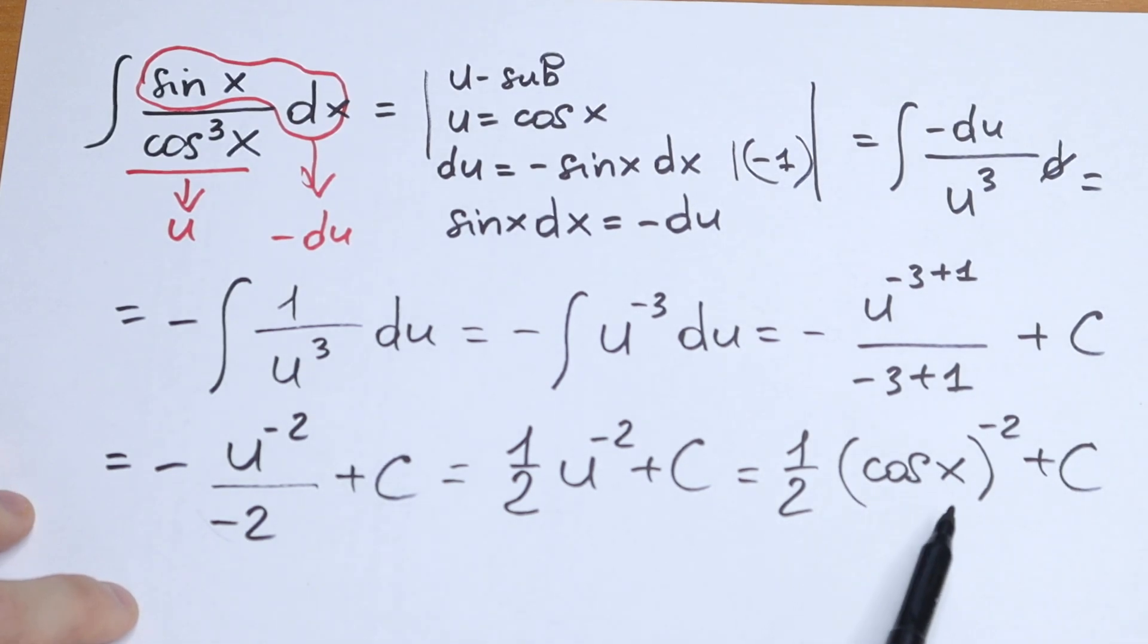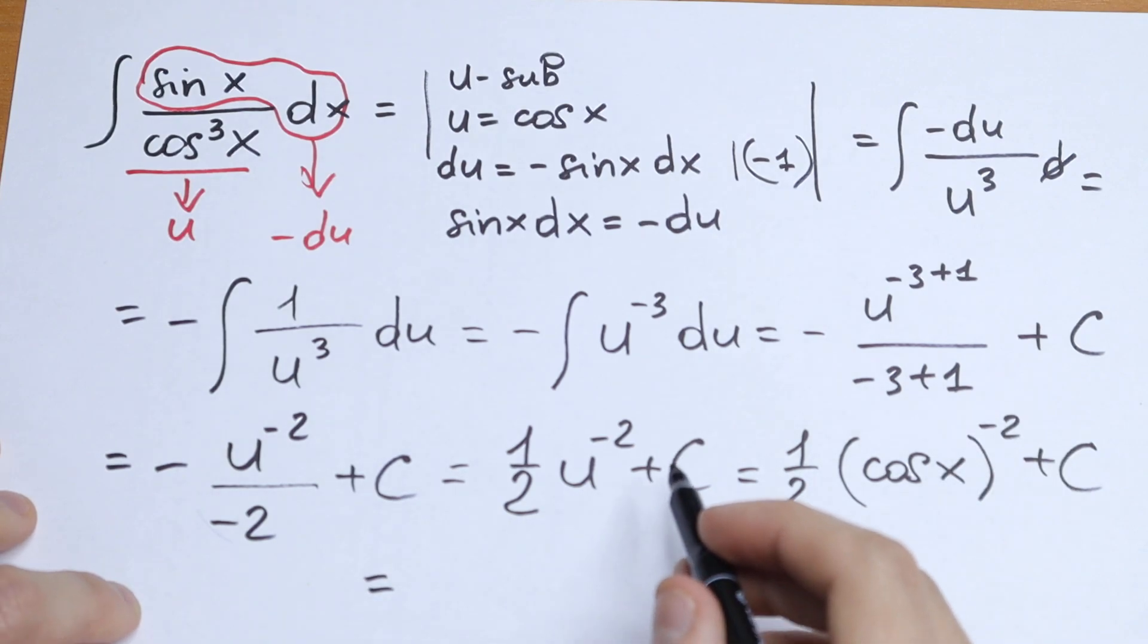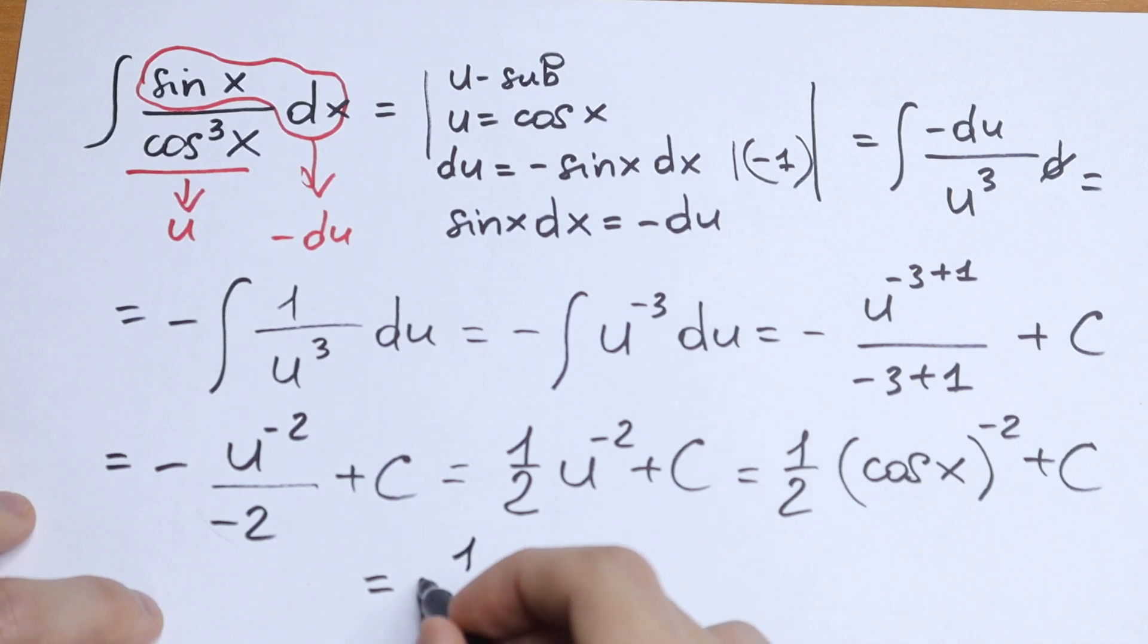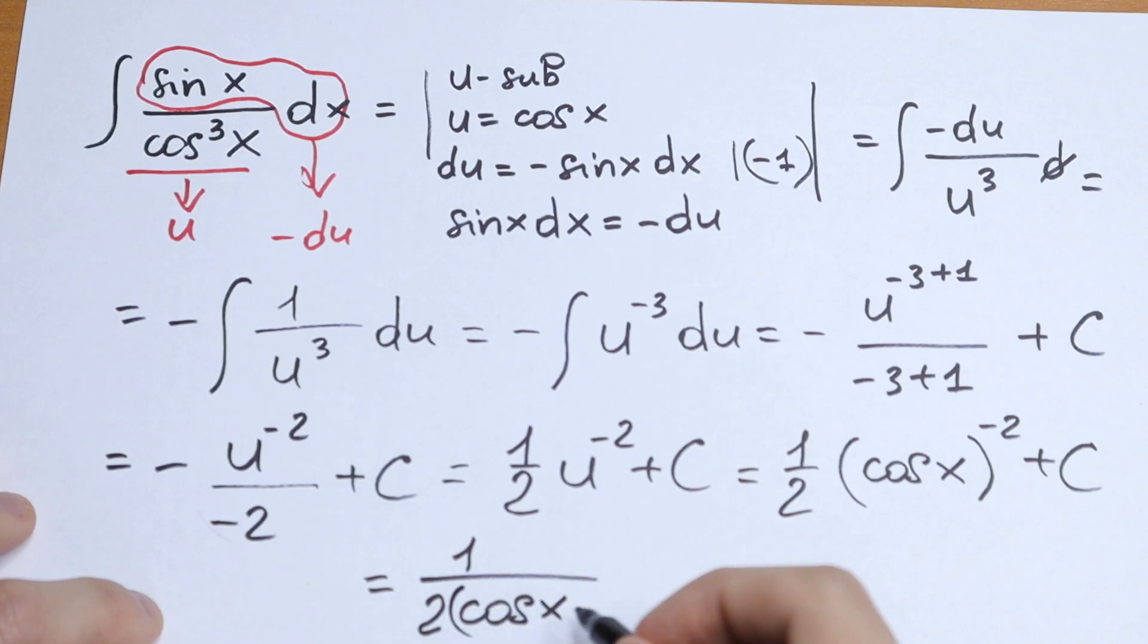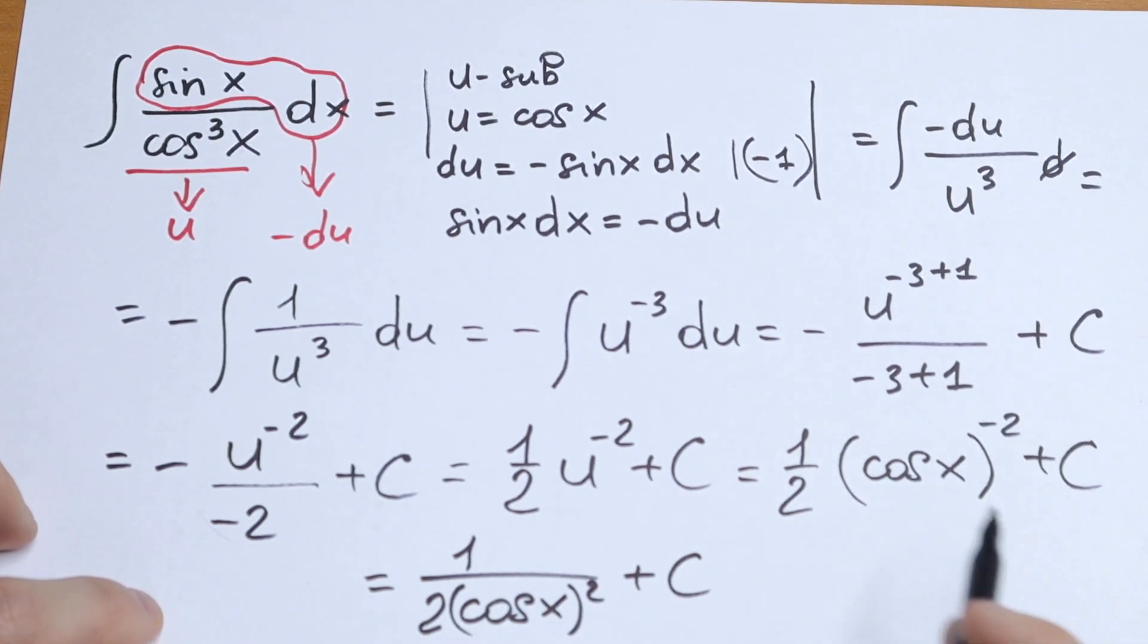Moreover, we can write this cosine in our denominator. So it will be plus, it will be second power. So the final result after all simplifying will be 1 over 2 cos² x plus c. And this is our final answer after all simplifying.